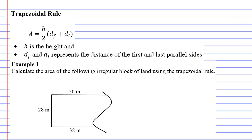The trapezoidal rule is used for calculating the area of irregular type shapes. If you look down at example one, you can see our irregular shape.